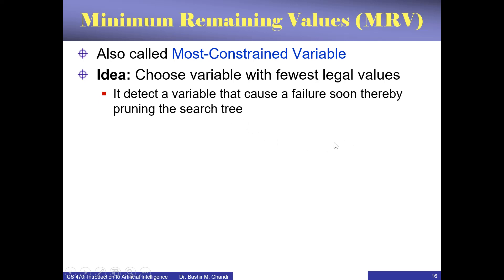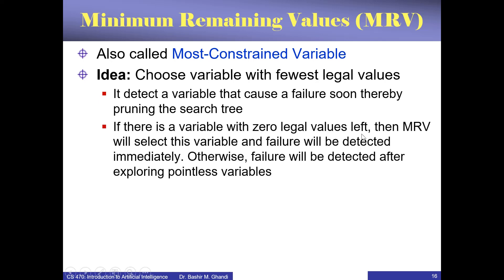We don't have to waste too much time searching many other variables that will lead to a failure. Because if there is a variable with zero legal values, this heuristic will select it and it will immediately lead to a failure and then the algorithm will backtrack and choose another option. Otherwise failure will be detected after exploring pointless variables. Choose a variable that has fewer available values because if it's going to fail, it would be much easier to fail if there are a few options than if there are many options.